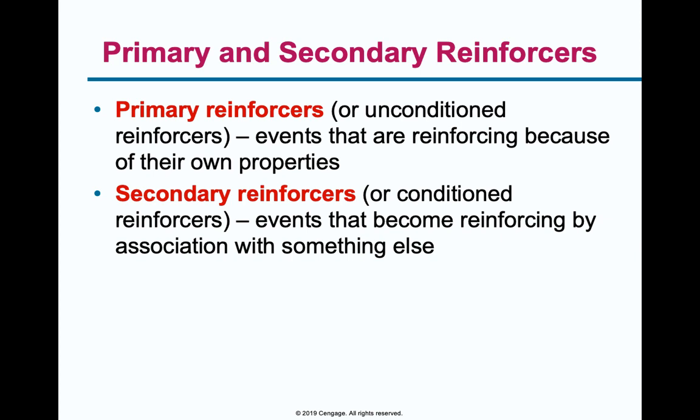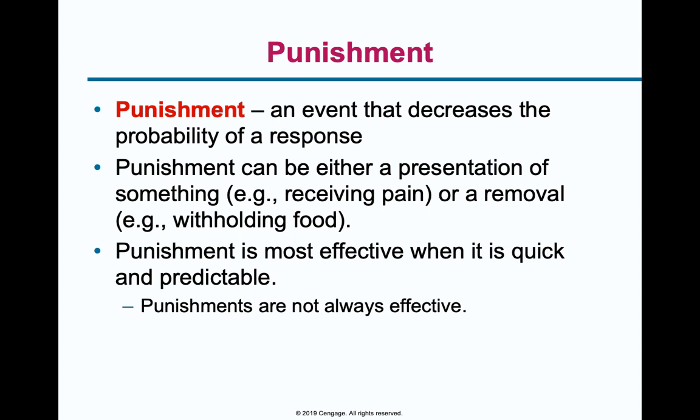Punishment is an aspect of operant conditioning, and this is something that decreases the probability of a response. Whenever you're punished, that means they did some task and then they get socially controlled for it, which decreases the likelihood that they're going to do that again. Punishment is most effective when it is quick and unpredictable. However, punishments are not always effective, so there are a lot better methods to achieving behavior modification than punishment a lot of times. The form that punishment takes is often pain or withholding food.